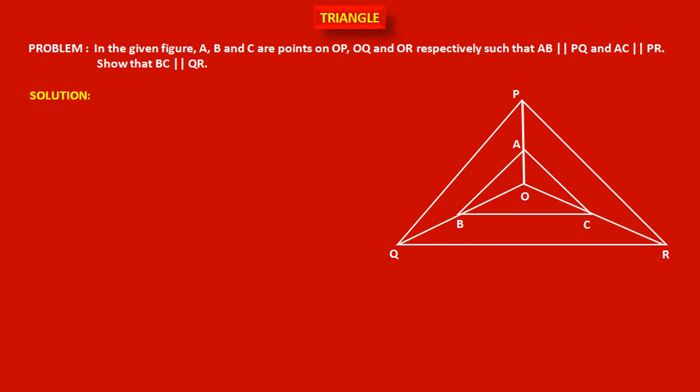Now see the solution. In this triangle, segments are given parallel to one side of the triangle. So we have to apply the Basic Proportionality Theorem or its converse, so that we will get the proof.